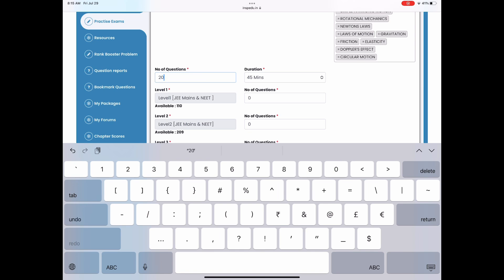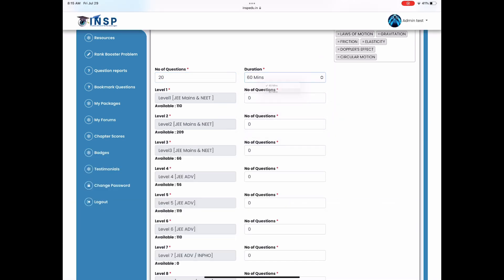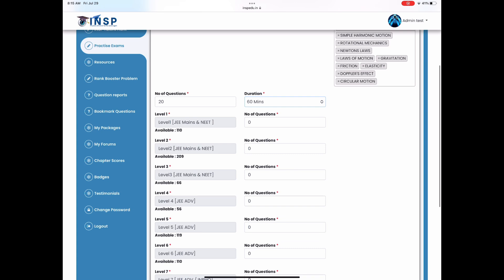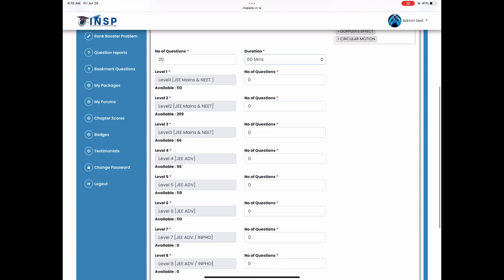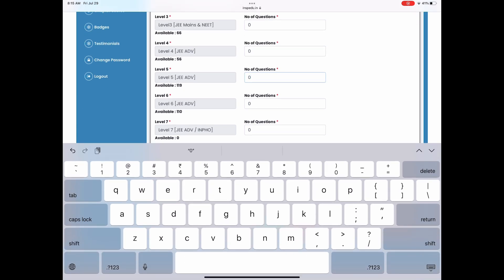I will be typing here 20 number of questions and I will select time for 1 hour and in level 5 and level 6 we can select 10 problems maybe.